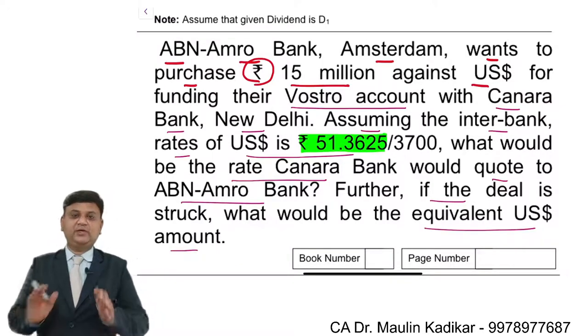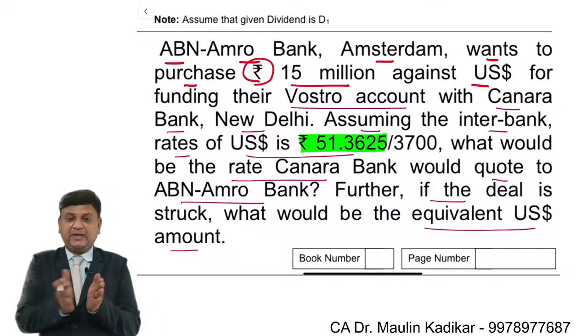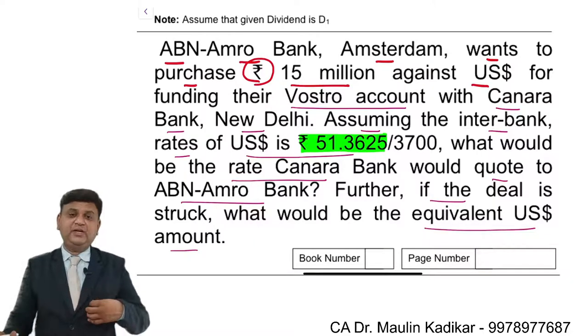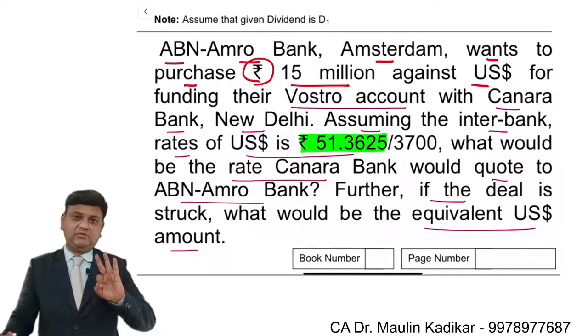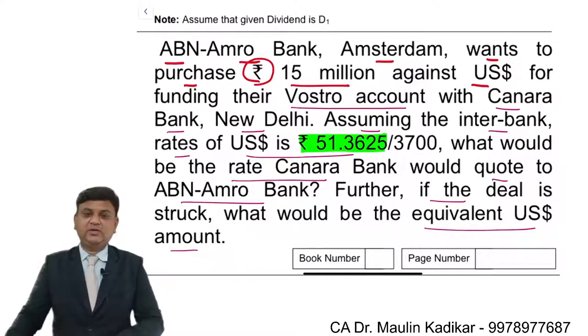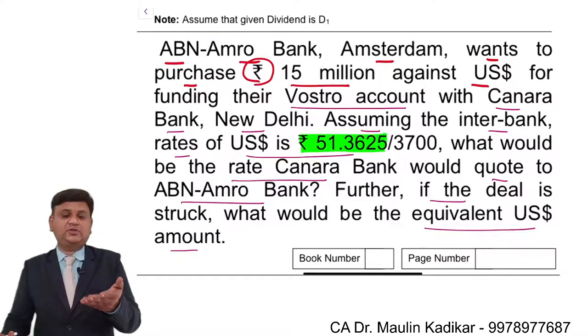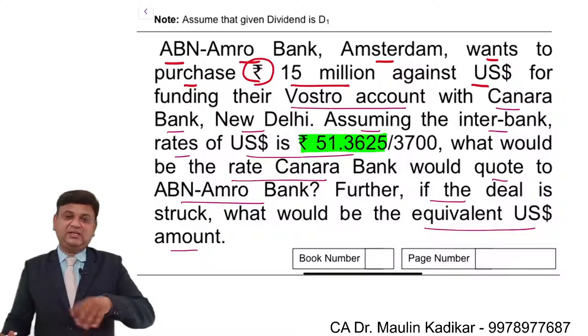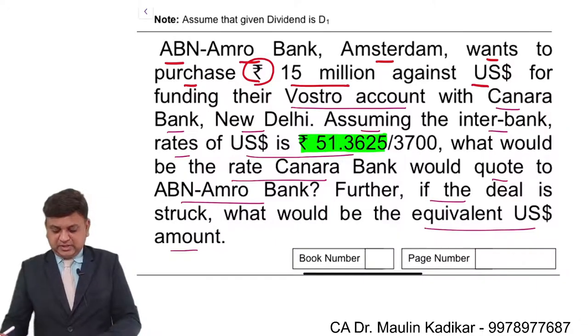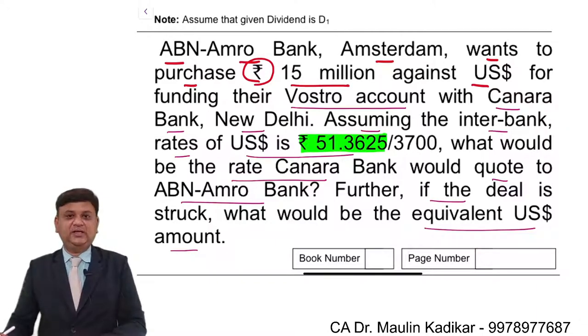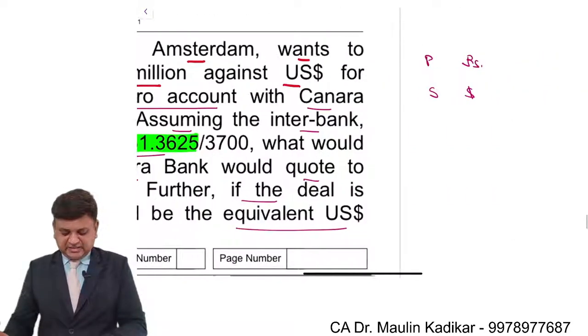We understand that for interbank transactions we have three types of accounts: Nostro account, Vostro account, and Loro account. Nostro account is our account with you, Vostro account is your account with us. The question asks what is the equivalent dollar amount.